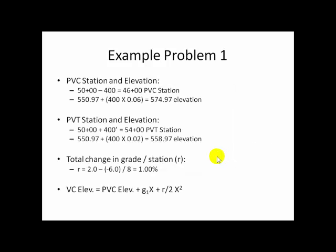So, as we said in step one, let's calculate the PVC station and the elevation at the PVC. Half of the curve length, or 400 feet, prior to the VPI, gives us a station of 46 plus 00. When we take the VPI station and apply a slope of 6% for 400 feet, we will come up with an elevation of 574.97.